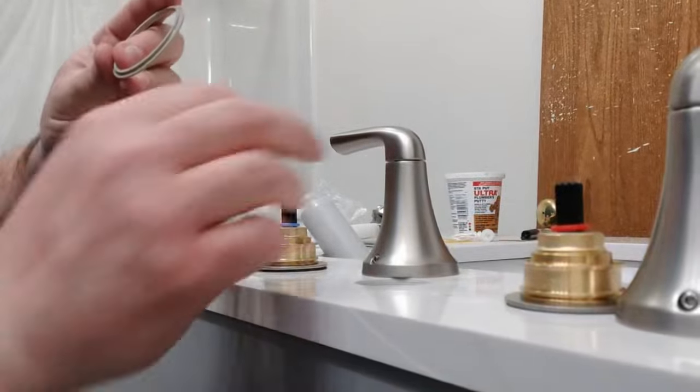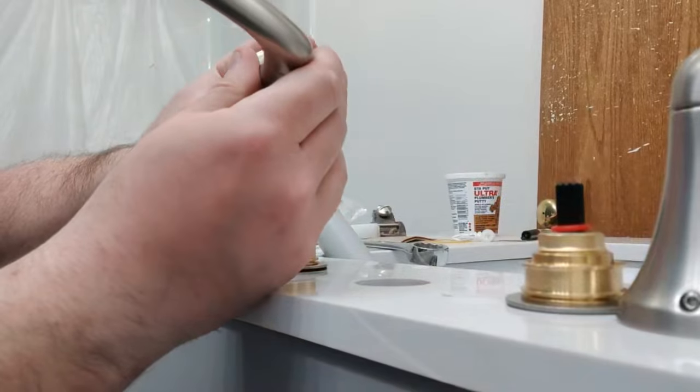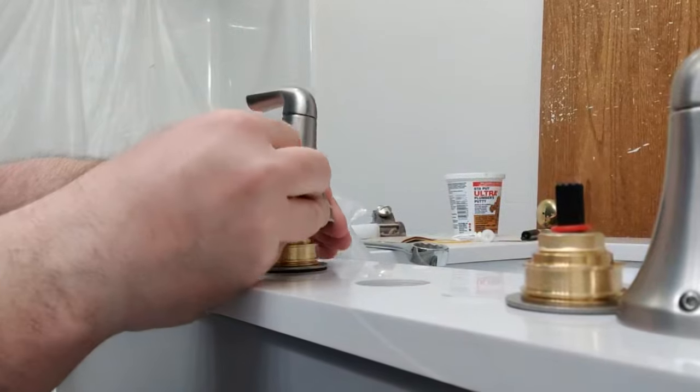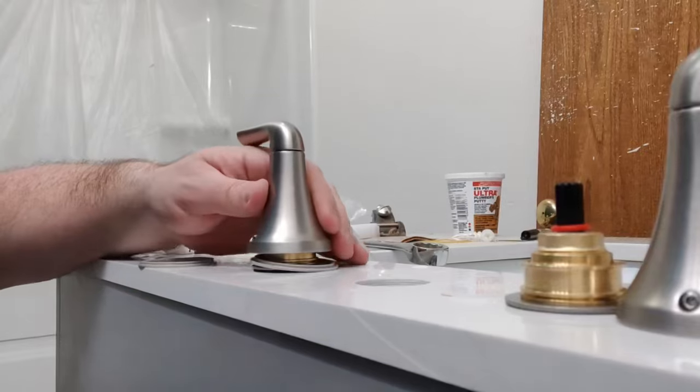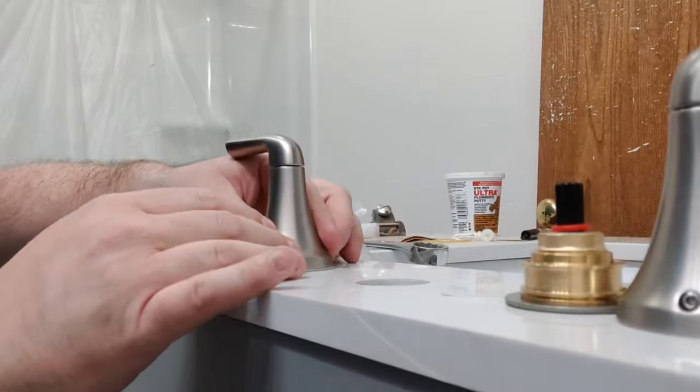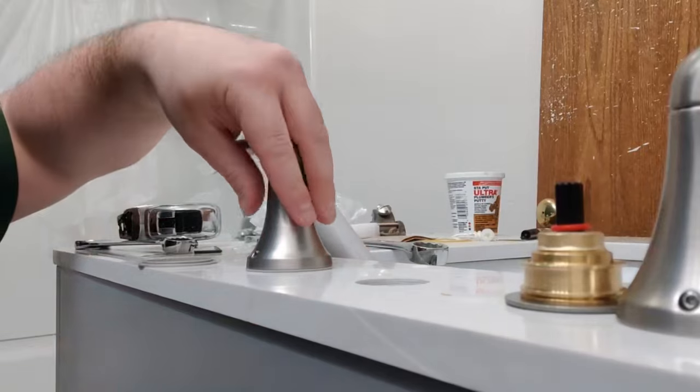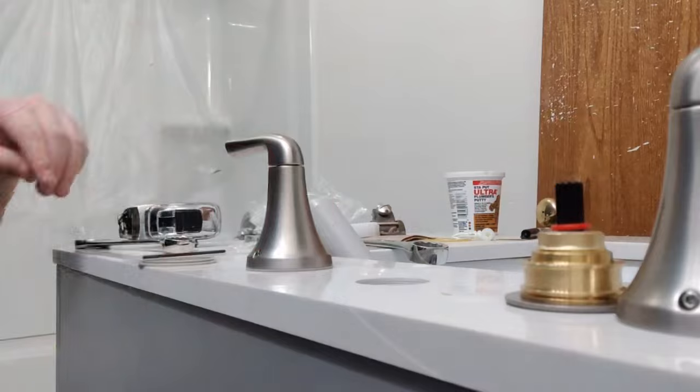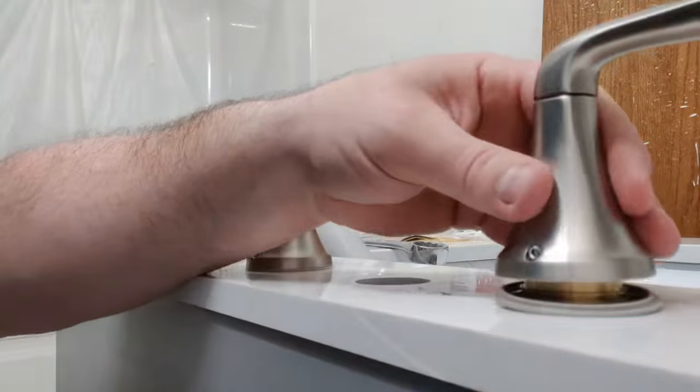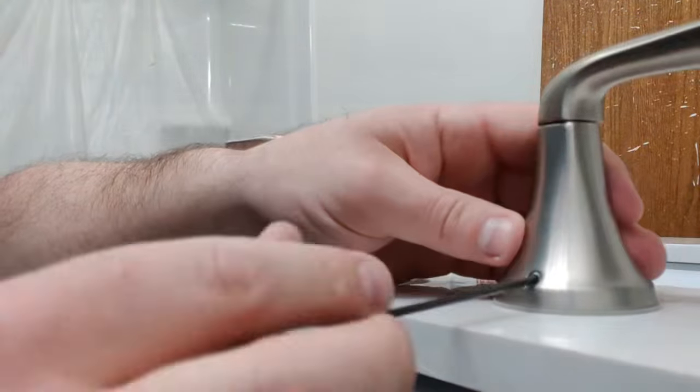Next we're going to take our washers and put them on the bottom of the handles and then slide them over the top of the valve. Now if you want you could put them directly over the valve first. It doesn't really matter. Next I'm going to tighten the handle down with the allen wrench that's included with the faucet. Then repeat the process for the other handle.